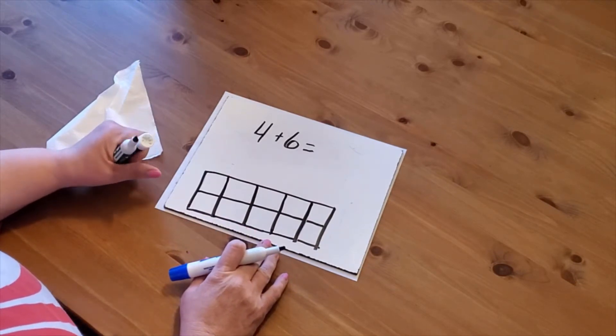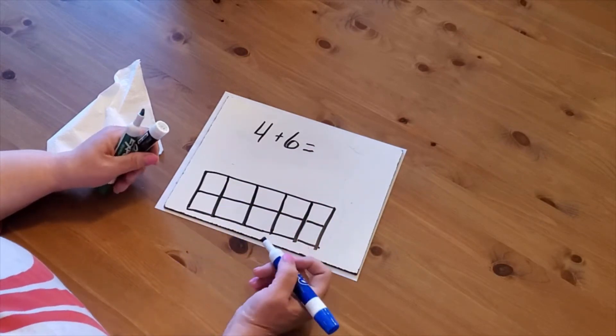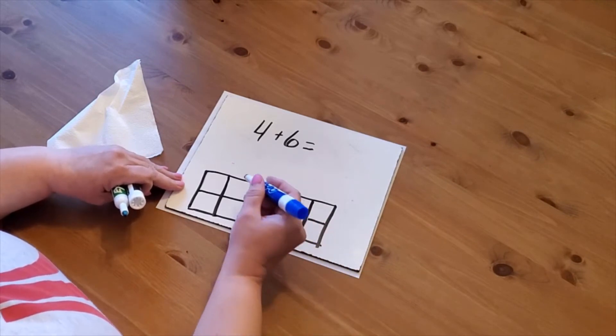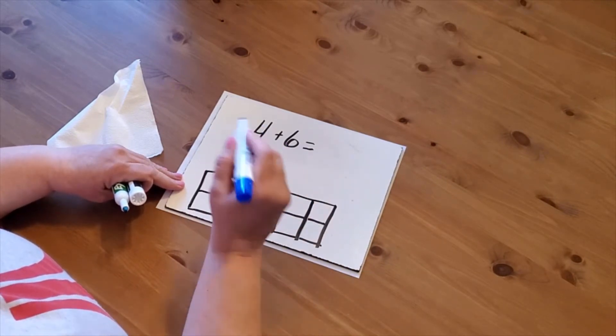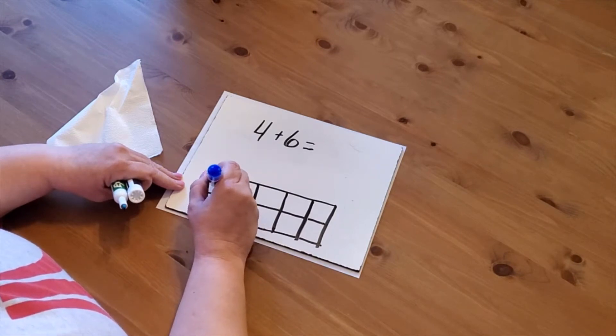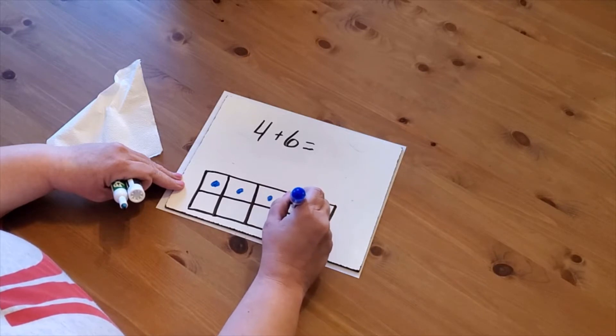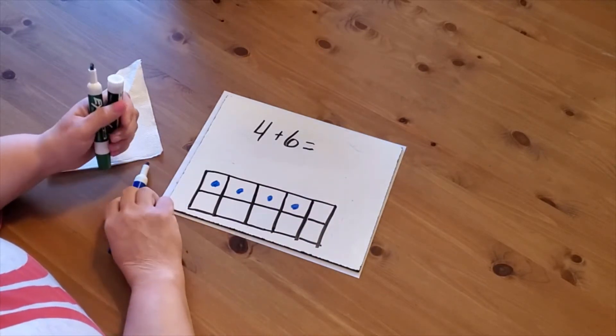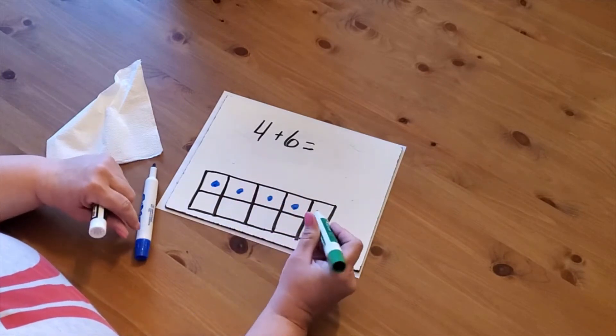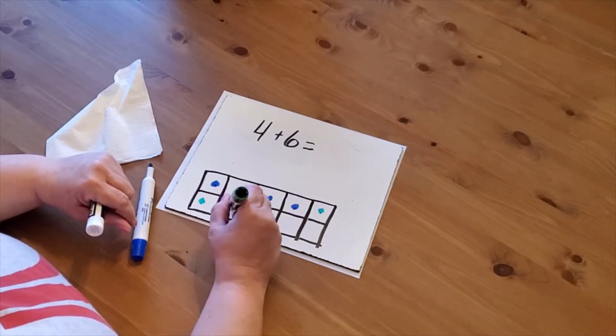Down here to help you find that answer. You'll use two different colors on your activity. So I'm going to take that first number, 4, and I'm just going to put four dots. Plus six more: one, two, three, four, five, six.